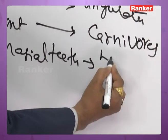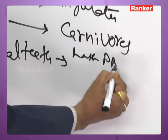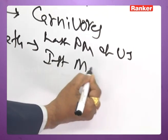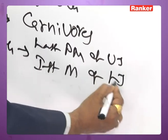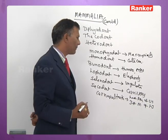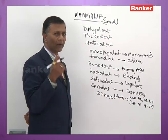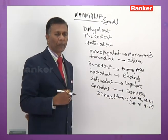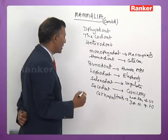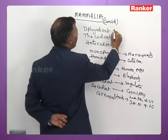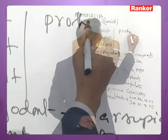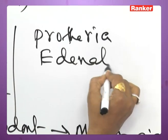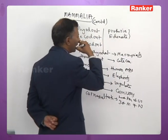In carnivores, the last premolar of the upper jaw and the first molar of the lower jaw have dagger-shaped cusps — those teeth are called carnassial teeth. In some mammals, teeth are entirely absent. For instance, in Prototheria and Edentata, teeth are absent.